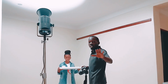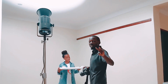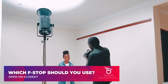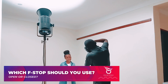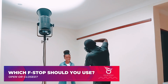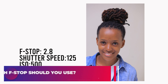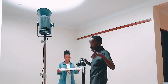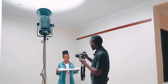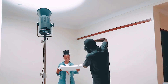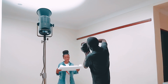The next shot I'm going to shoot at f/2.8. In order to compensate for the brightness I'm going to reduce the shutter speed a bit so that I compensate for the lost light.